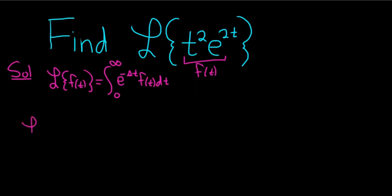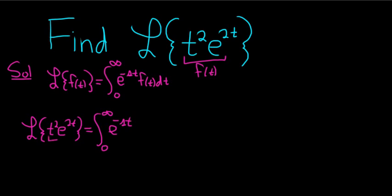So we have the Laplace transform of t squared e to the 2t. This is equal to the improper integral from 0 to infinity of e to the negative st, and then f(t) is t squared e to the 2t — so we replace f(t) with t squared e to the 2t, and then we have the dt.